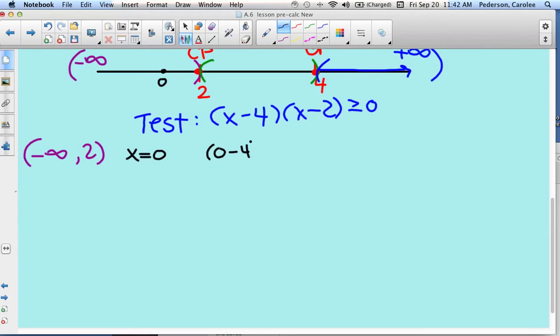So I'm going to let x equal 0 and substitute it into the blue inequality. So I have 0 minus 4, 0 minus 2, greater than or equal to 0. Negative 4 times negative 2, greater than or equal to 0. Multiply the two numbers on the left and read the inequality. Is 8 greater than or equal to 0? Yes, this is true. So this purple will be a solution to the inequality.